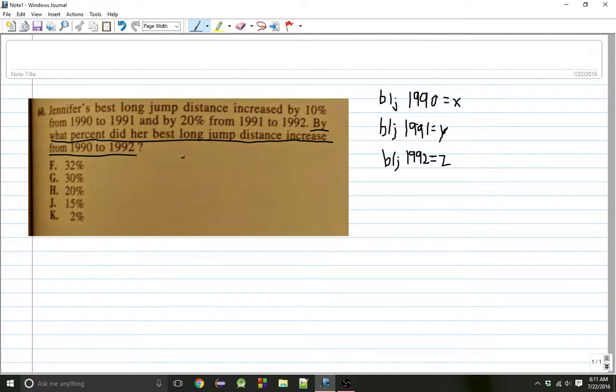So we're given that Jennifer's best long jump distance increased by 10% from 1990 to 1991, which means that in 1991, the 1991 value is 110% of X, or the value in 1990, which is 1.1 times X. Y equals 110% of X, or 1.1 times X.